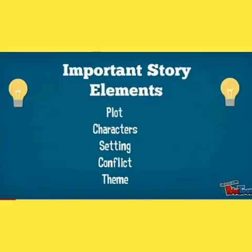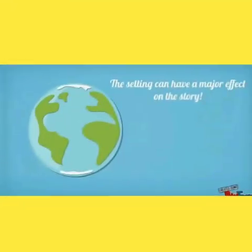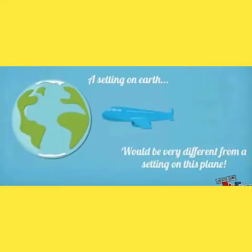Now we will discuss the important elements of a story. Elements means the parts from which a story is made. There are five major elements in a story: plot, characters, setting, conflict, and theme. First of all we will discuss the setting of a story. The setting is when and where a story takes place. A setting can be a home, an office, the jungle, or even earth — and the setting has a major effect on the story.